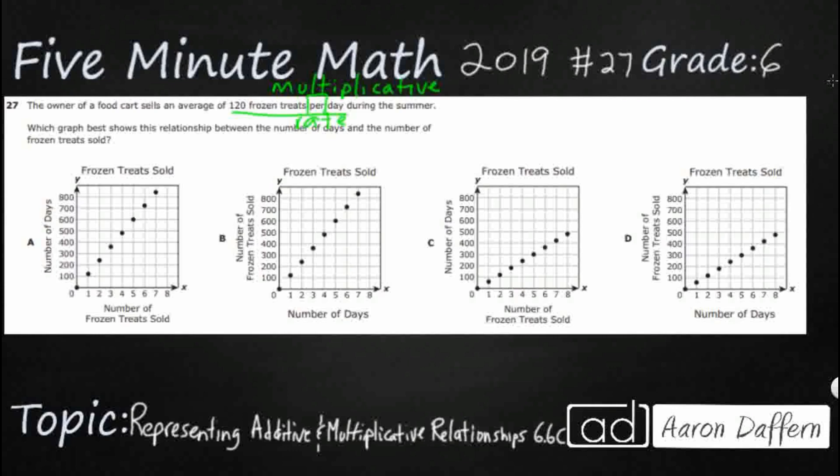So we have to match that with one of these graphs down here. So let's see if we can just make our own coordinates here. We'll call it xy, but really we'll label them as we've got each day, and then we've got frozen treats. So we'll put d and ft. So let's see, for day one, it's 120 because it's 120 per day, and we'll just do a few more.